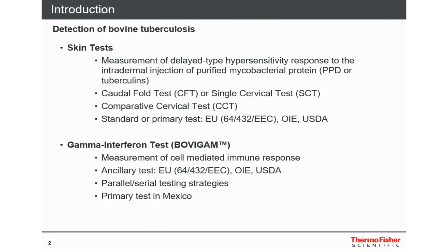The second test is the gamma interferon test — this is the Bovigam test, produced in Australia. It measures the cell-mediated immune response and is mostly an ancillary test in the EU, OIE, and USDA. You can have parallel and serial testing strategies. Nevertheless, it's also a primary test in Mexico.